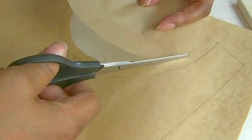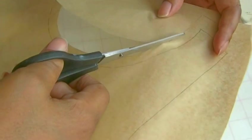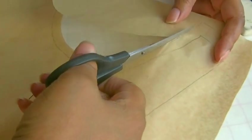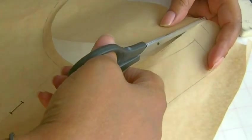So I'm going to continue cutting out the rest of this pattern. And then I'll show you what my pattern pieces look like once they've added all my seam allowances.